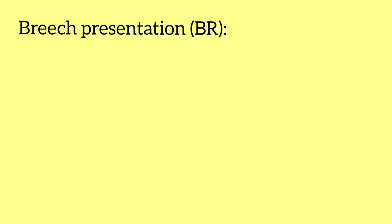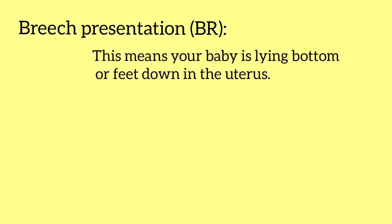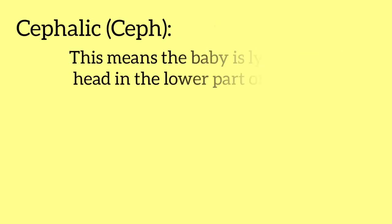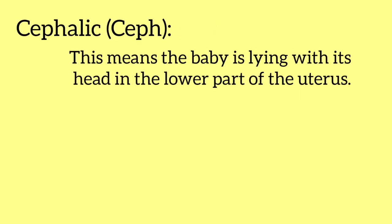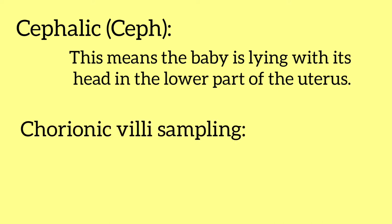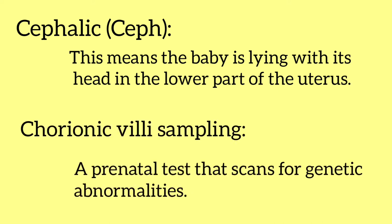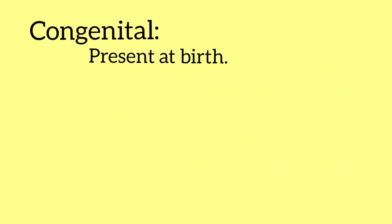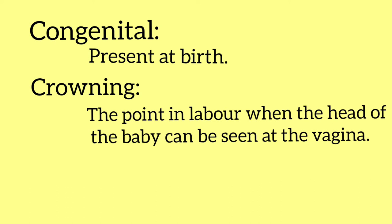Breech presentation means your baby is lying bottom or feet down in the uterus. Cephalic means the baby is lying with the head in the lower part of the uterus. Chorionic villi sampling is a prenatal test that scans for genetic abnormalities. Congenital means present at birth. Crowning is the point in labor when the head of the baby can be seen at the vagina.